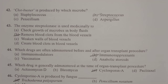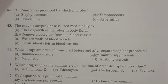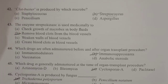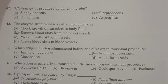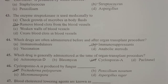Next: which drugs are often administered before and after organ transplant procedures? They are known as immunosuppressants. During organ transplantation, the immune system is activated and may reject the transplanted organ, so immunosuppressants are used to prevent rejection. The important immunosuppressant or immunosuppressive agent is cyclosporine A, which is commonly used during organ transplantation.